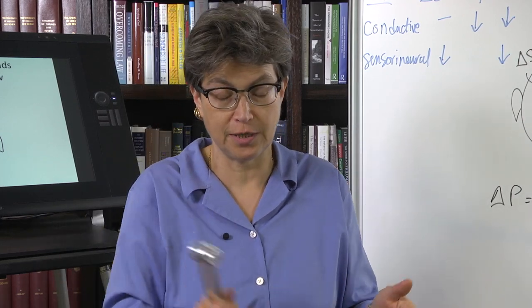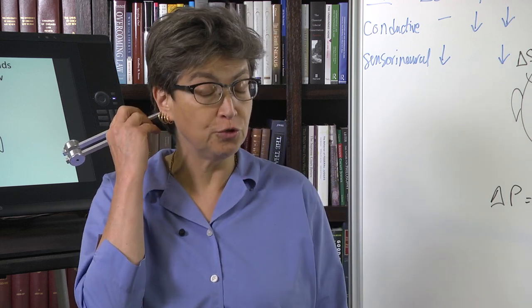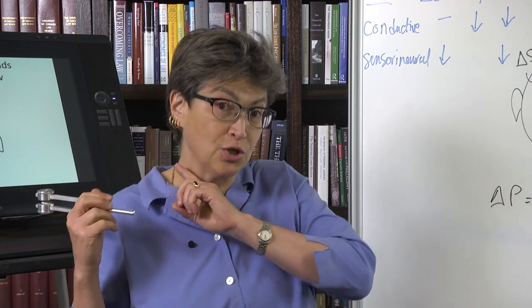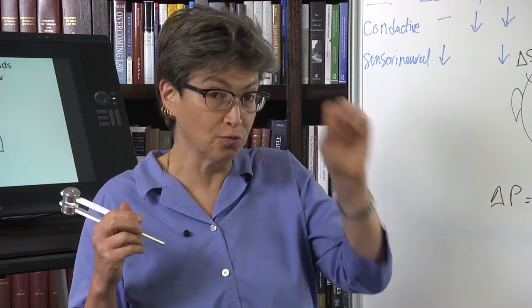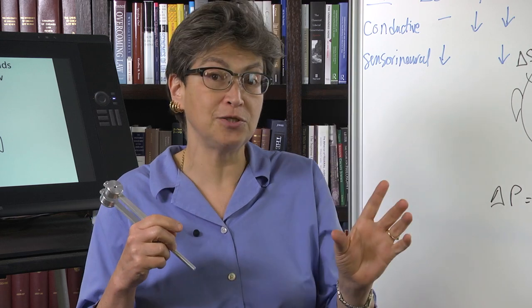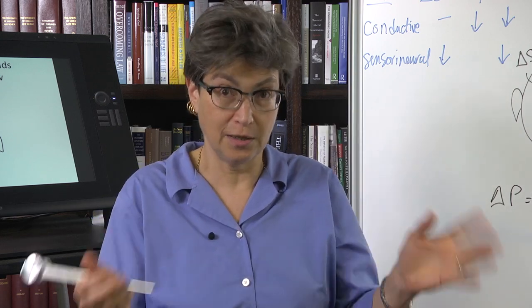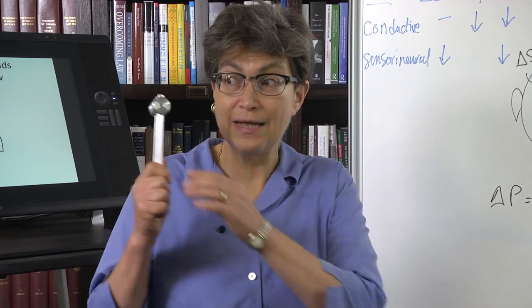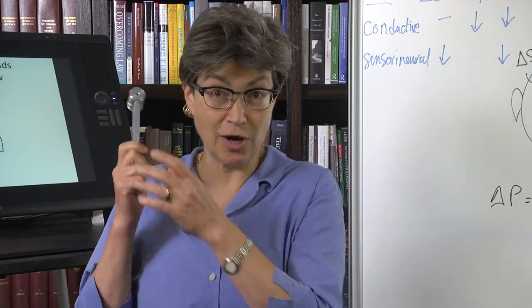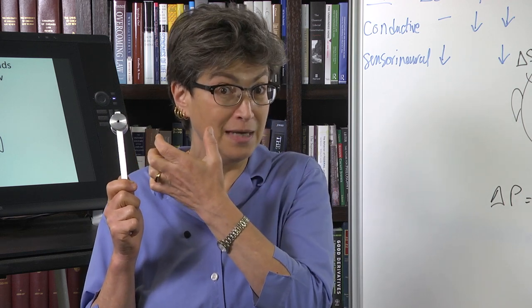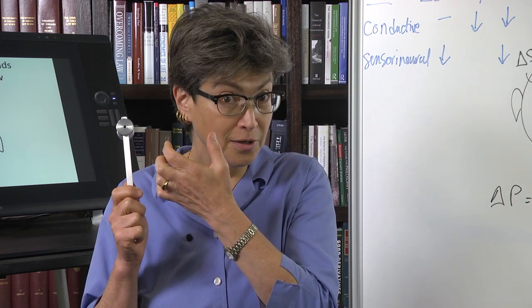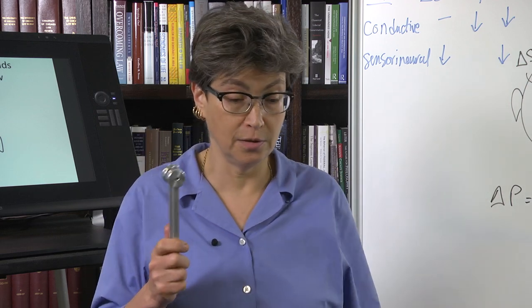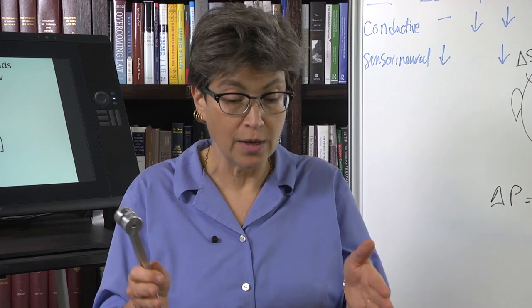Remember that we have these two steps: conduction and then sensory neural processing. When I put that tuning fork on the mastoid, it bypasses the conduction step, goes directly to the cochlea. My sensory neural processing hears it. When I put it in front of the ear, it's traveling through the air, getting amplified by the external ear, and I'm hearing it louder.